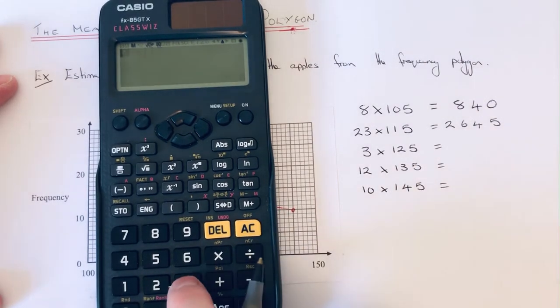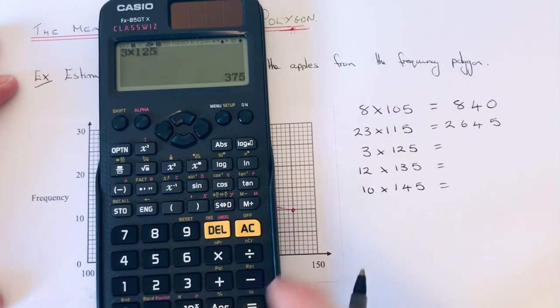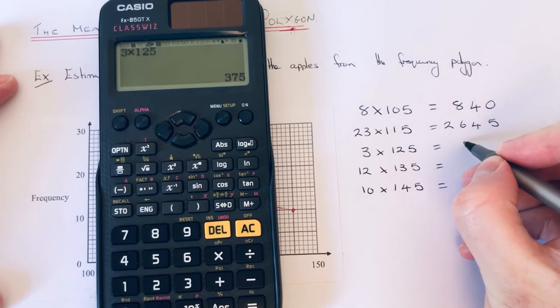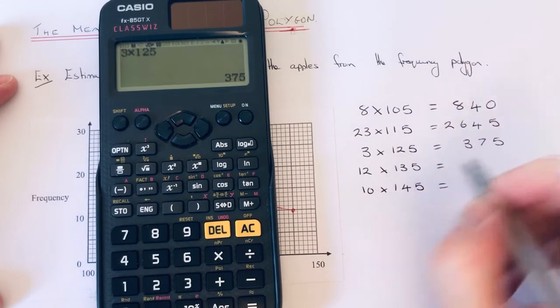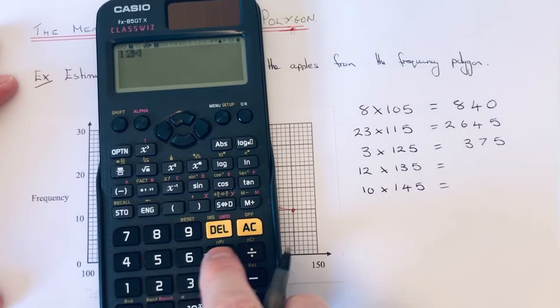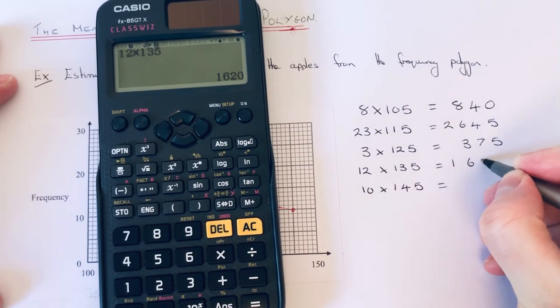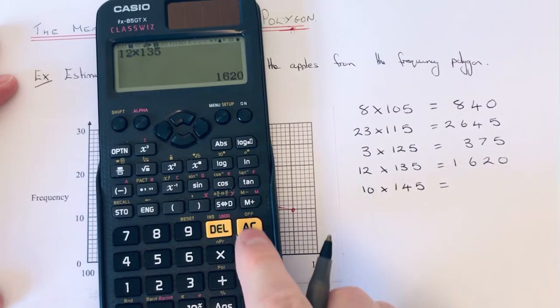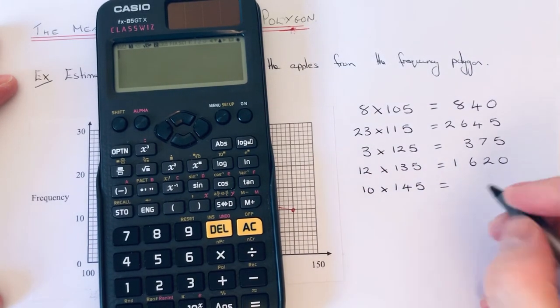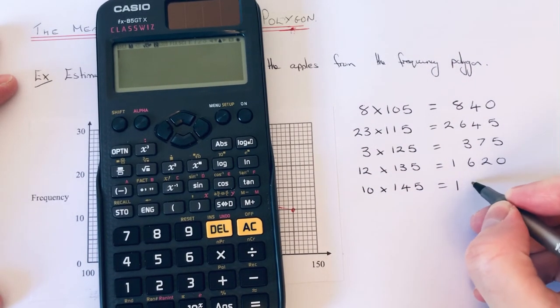3 times 125 is 375. 12 times 135 is 1620. And 10 times 145 is 1450.